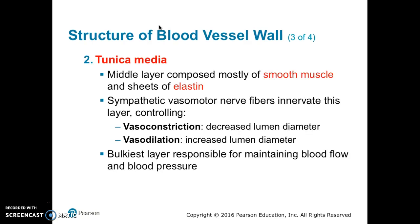The layer of the blood vessel deeper than the tunica intima is the tunica media — think of 'media' for middle. It is composed mostly of circularly arranged smooth muscle and sheets of elastin. Sympathetic vasomotor nerves innervate this layer, causing vasoconstriction — a decrease in the lumen diameter — and also vasodilation, which is an increase in the lumen diameter. The tunica media is the bulkiest layer and is responsible for maintaining blood flow and pressure.